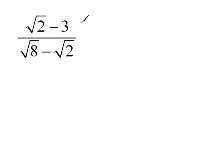No two problems are ever done the exact same way. There are always things that you can look at and go, hmm, I think this rule will apply. As long as you're using the valid math rules that you've learned up to this point, you might be able to look at things in a slightly different way and still get the correct answer. For instance, whenever we look at this problem, we could multiply by the conjugate and work through it that way.